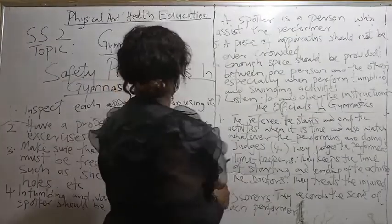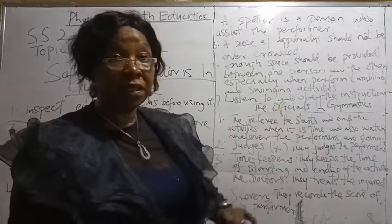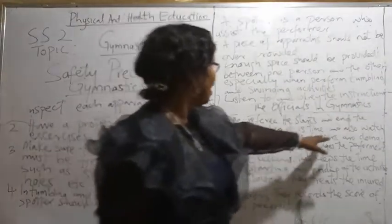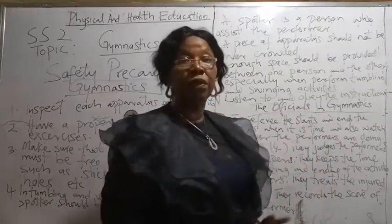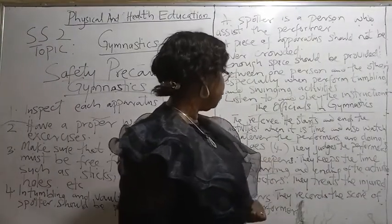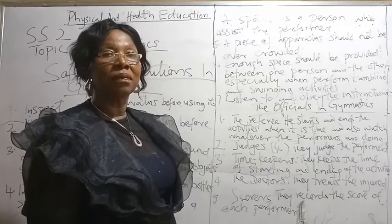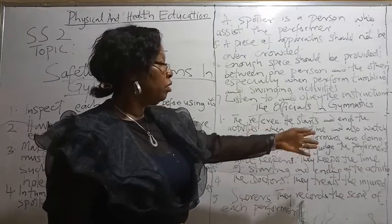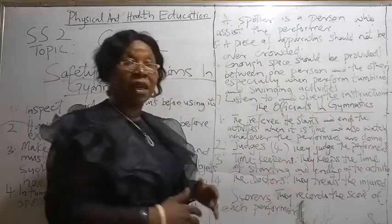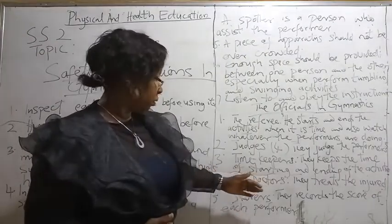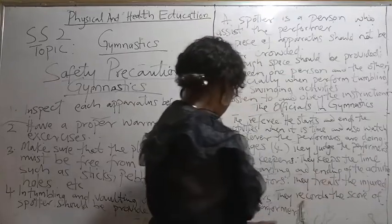Now let's go to the officials in gymnastics. 1. The referee — he starts and ends the activities when it is time and also watches whatever the performers are doing. 2. Judges — they judge the performance. 3. Timekeepers — they keep the time of starting and ending of activities. 4. The doctors. 5. Scorers — they record the score of each performer.